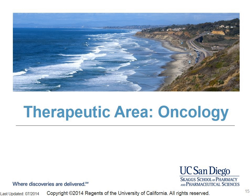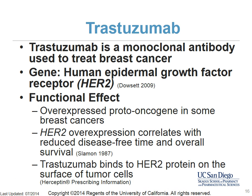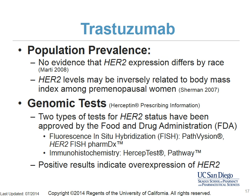The second example of pharmacogenomic testing is from the area of oncology. We will focus on trastuzumab and the gene for human epidermal growth factor receptor, or HER2. HER2 is a proto-oncogene that is overexpressed in about a third of invasive breast carcinomas. Overexpression of HER2 is correlated with reduced disease-free time and overall survival. Trastuzumab is a monoclonal antibody which binds to the HER2 protein on the surface of tumor cells, inhibiting their proliferation. Currently, there is no evidence HER2 expression differs by race, though HER2 levels may be inversely related to body mass index among premenopausal women.